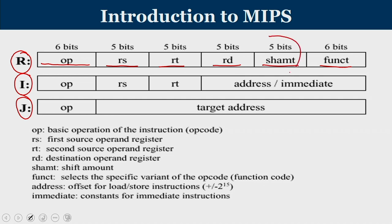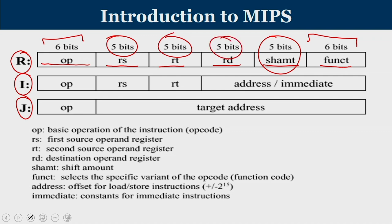The 5-bit shift amount field is used only in shift operations, indicating how many bits to shift. For an add operation, the function code specifies the category of add and addressing mode. Each 5-bit field identifies a register — since there are 32 registers, 5 bits specify the first source operand, 5 bits for the second operand, and 5 bits for the destination register.